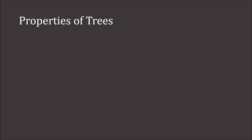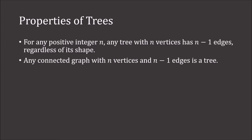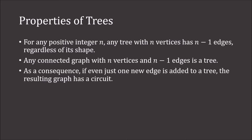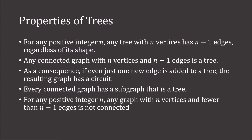Now, properties of trees. For any positive integer n, any tree with n vertices has n minus 1 edges, regardless of its shape. So any connected graph with n vertices and n minus 1 edges is a tree. As a consequence, if even just one new edge is added to a tree, the resulting graph has a circuit. Every connected graph has a subgraph that is a tree. And for any positive integer n, any graph with n vertices and fewer than n minus 1 edges is not connected.